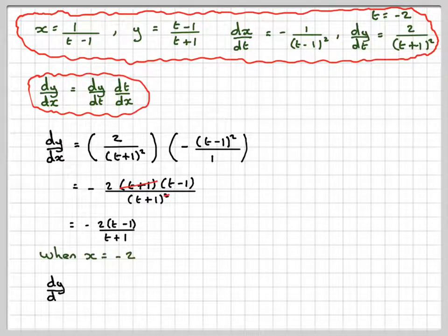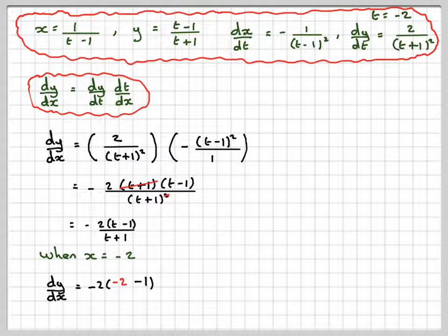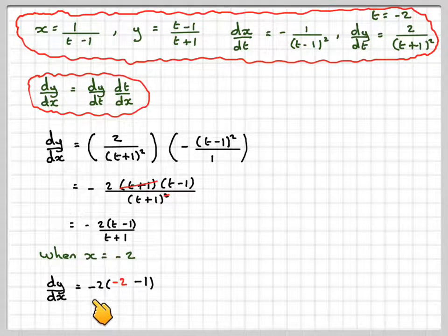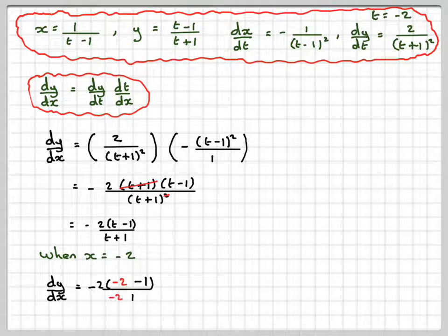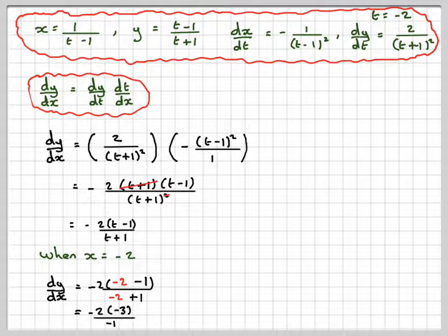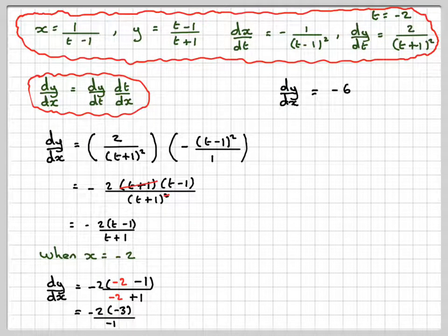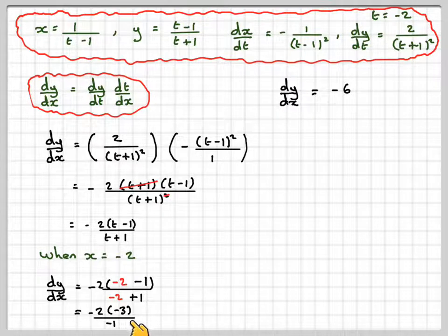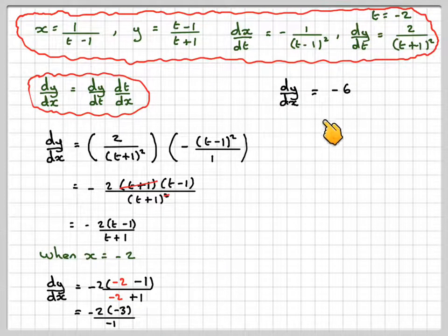So when t is minus 2, dy by dx will be minus 2 times minus 2 minus 1 over minus 2 plus 1. So it's going to give me minus 2 times minus 3 over minus 1, which gives me 3 times minus 2, which gives us dy by dx is minus 6.